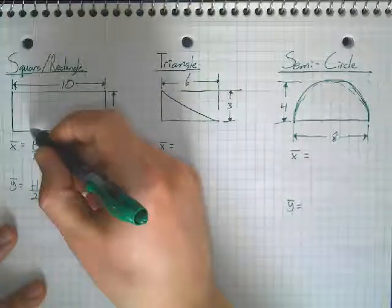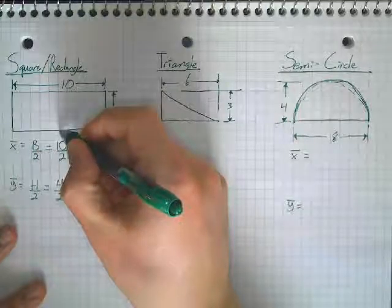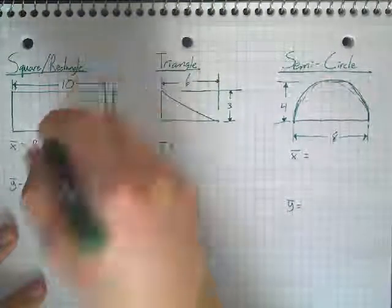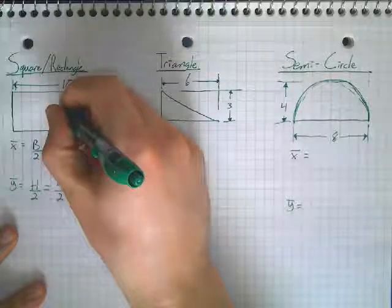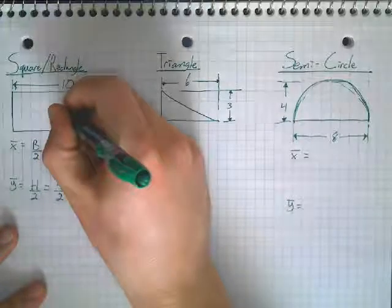I'll go one, two, three, four, five for my x, one, two for my y, and my centroid will be centered around there.